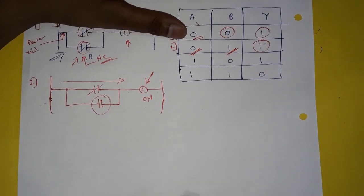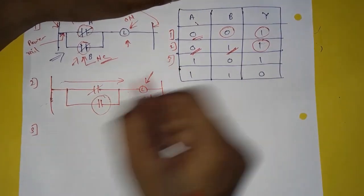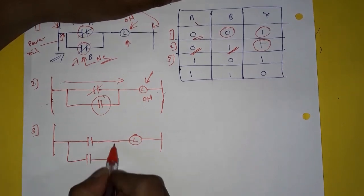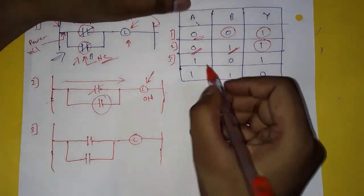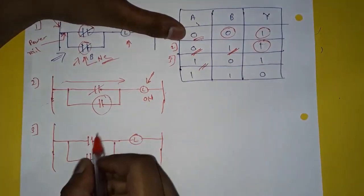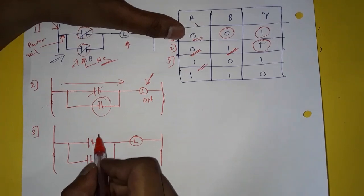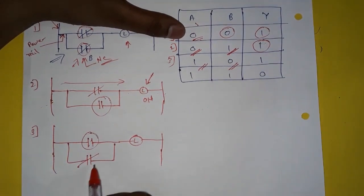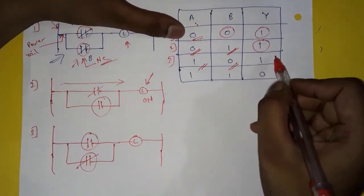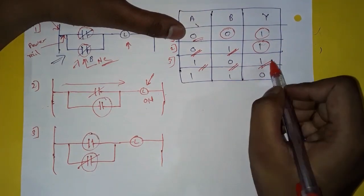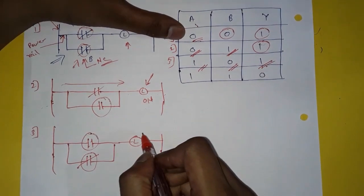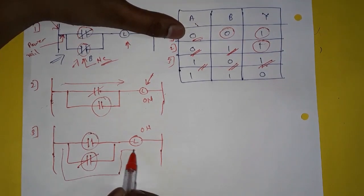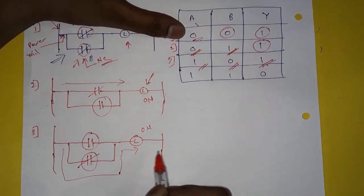In the third condition, A is energized so its contacts get open. B is de-energized so its contacts remain in normally closed position. Because of this, Y — that is our lamp — will glow. So it is 1, it is on. The current will flow through B's closed contact and the lamp will turn on.